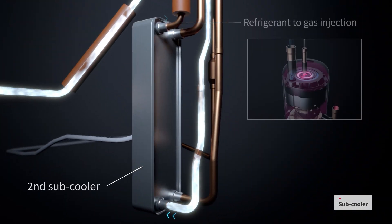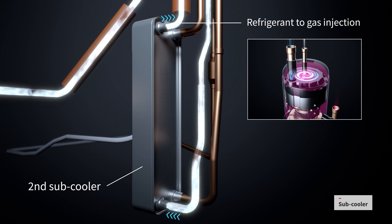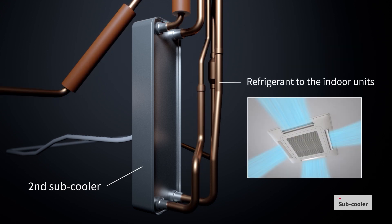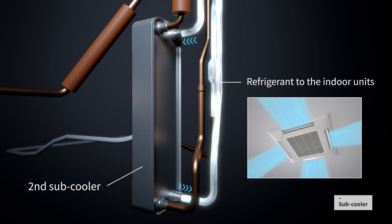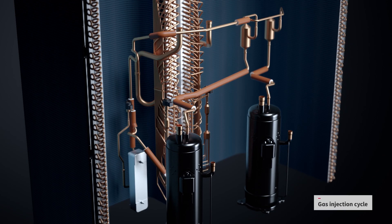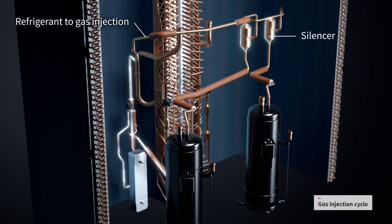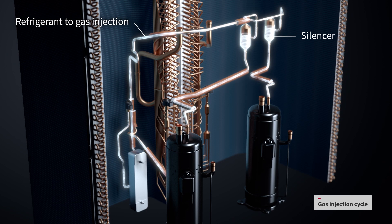And having passed through the sigma heat exchanger, most of the refrigerant flows to the indoor units to provide heating or cooling of the indoor space. But some of the refrigerant goes back into the scroll compressor as part of the gas injection cycle to increase the operating range, capacity and energy efficiency of the compressor.